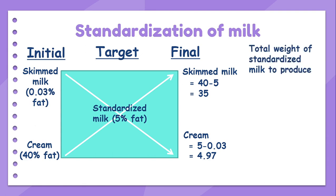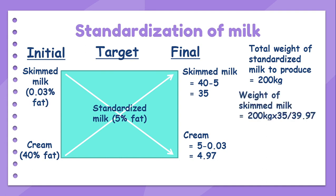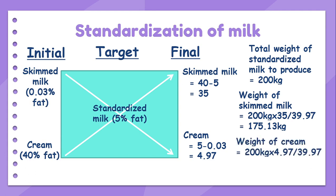Let's say we are going to make 200 kilograms of milk. By multiplying 200 kilograms with the weightage of each component, we can get the final weight required for each component. In this case, we need about 175 kilograms of skimmed milk and 24 kilograms of cream to produce 200 kilograms of milk with 5% fat content.